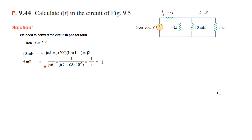The 5 millifarad capacitor becomes 1/(j*omega*C). Plugging in the values gives 1/j, which equals minus j. To understand why: multiply numerator and denominator by minus 1, giving minus j / (minus j squared). Since j squared equals minus 1, minus j squared equals plus 1, so we get minus j. That is how 1/j equals minus j.